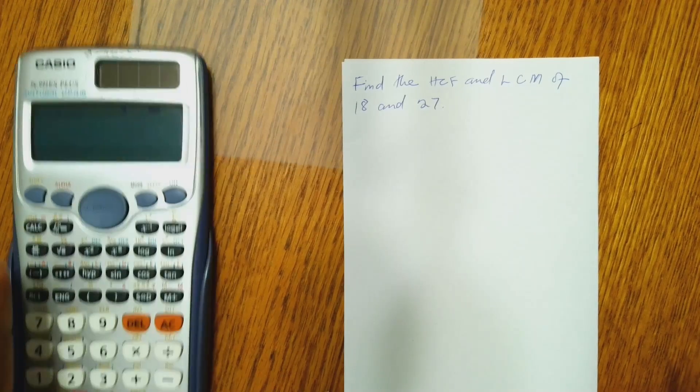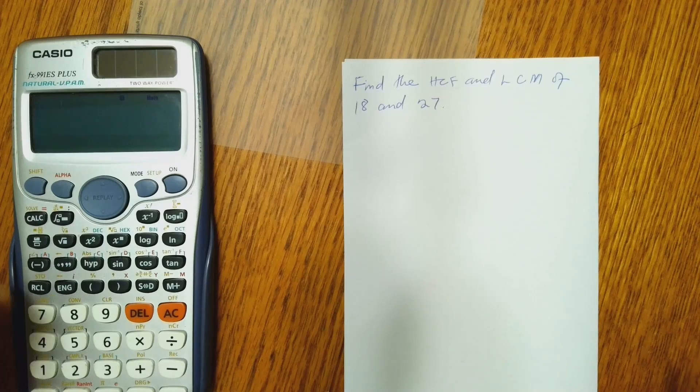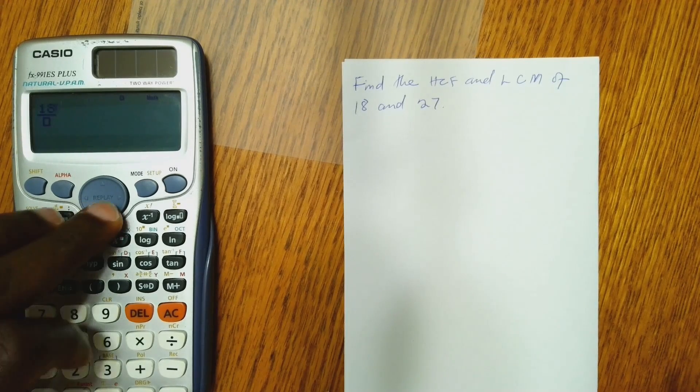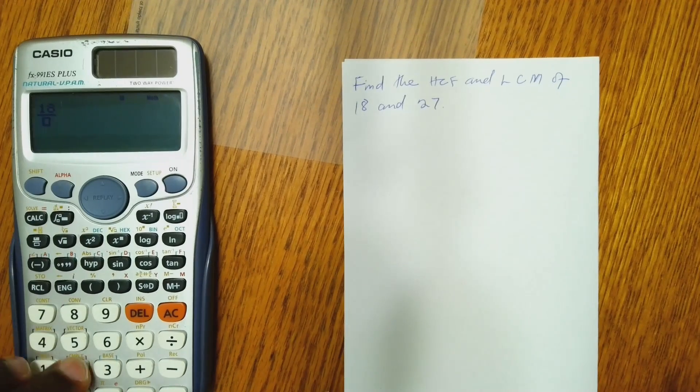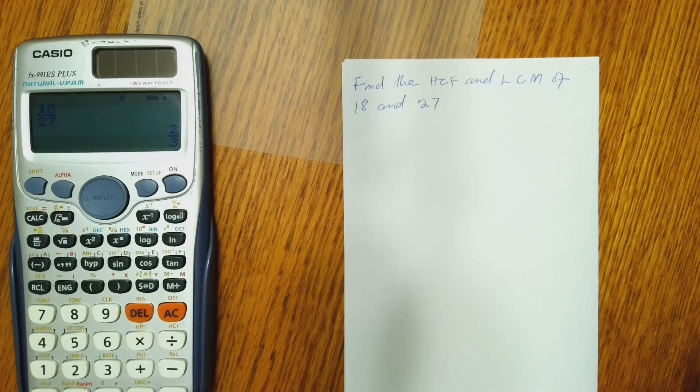After turning it on, we write the two numbers as fractions. So we press the fraction symbol, 18. We press the down key, 27. And then we press equal to. And that gives us 2 over 3.